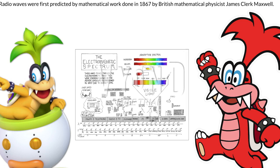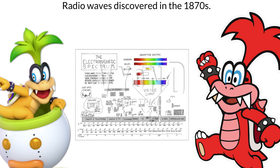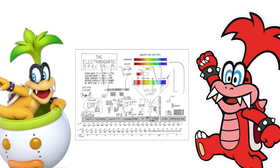Radio waves were first predicted by mathematical work done in 1867 by British mathematical physicist James Clerk Maxwell. Radio waves are actually discovered in the 1870s. Maxwell noticed wave-like properties of light and similarities in electrical and magnetic observations. His mathematical theory, now called Maxwell's equations, described light waves and radio waves as waves of electromagnetism that travel in space, radiated by a charged particle as it undergoes acceleration. In 1887, Heinrich Hertz demonstrated the reality of Maxwell's electromagnetic waves by experimentally generating radio waves in his laboratory, showing that they exhibited the same wave properties as light: standing waves, refraction, diffraction, and polarization. Radio waves, originally called Hertzian waves, were first used for communication in the mid-1890s by Guglielmo Marconi, who developed the first practical radio transmitters and receivers. The modern term radio wave replaced the original name Hertzian wave around 1912.